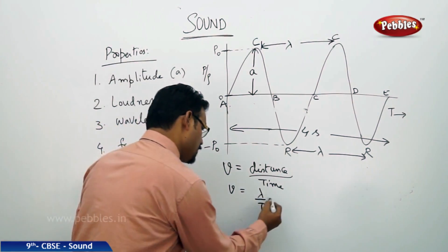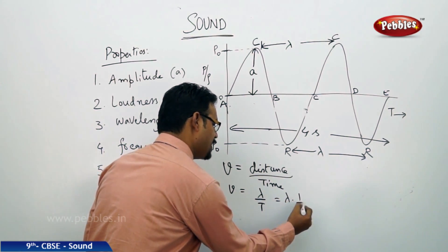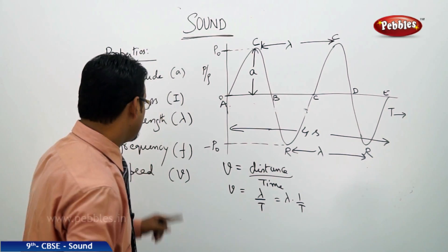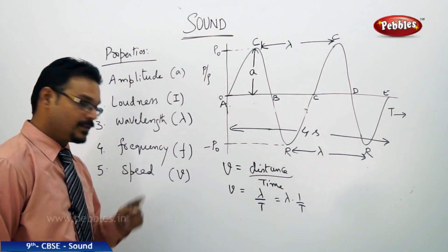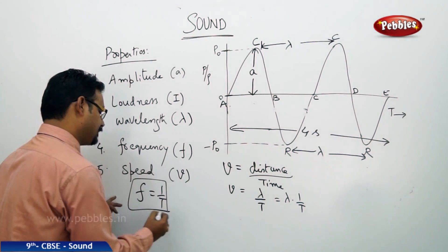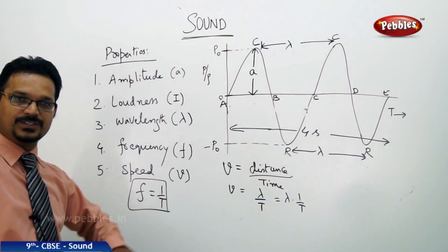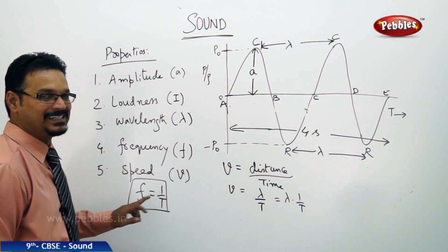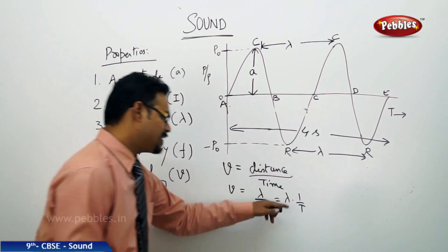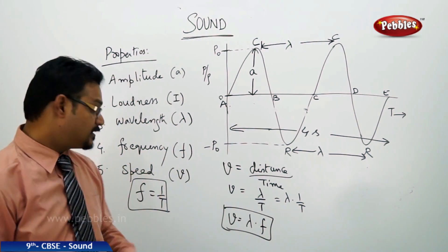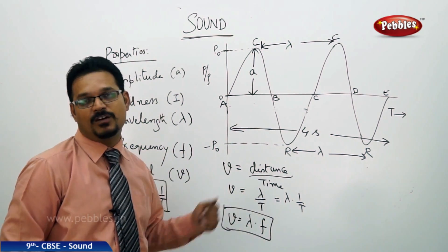Or else, you can write lambda by T as lambda into 1 by T. Both are the same. There is one more definition for frequency. Frequency is reciprocal of time period. Reciprocal means inverse. Frequency is reciprocal of time period. It means 1 divided by T. So, instead of 1 by T, I can write F. So, therefore, V equals to lambda into F. F lambda. That is the formula for speed of sound.